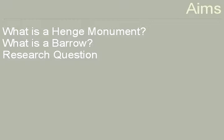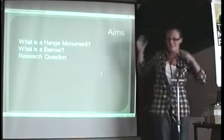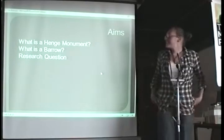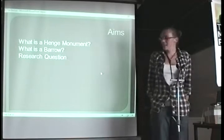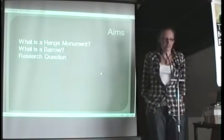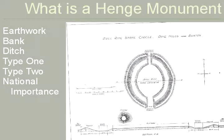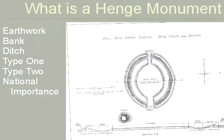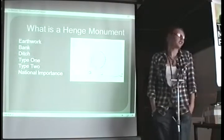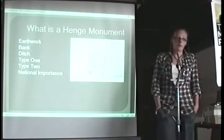So I think this one's a bit of a rhetorical question, what is a Henge Monument? If you're not sure you can just pop outside and have a look. I'm also covering what is a barrow which is a slightly more difficult question and then finally the research question that led me to do the geophysical study in the first place. So what is a Henge Monument? It's an earthwork which is an archaeological feature created out of earth. It typically has a bank and a ditch. There are two types of Henge Monuments which relate to the entrances. There's a type 1 Henge Monument which has a single entrance and a type 2 Henge Monument which has two entrances. All Henge Monuments are nationally important.